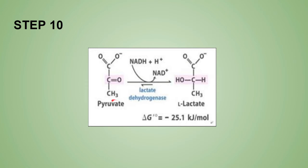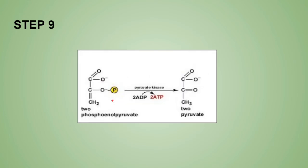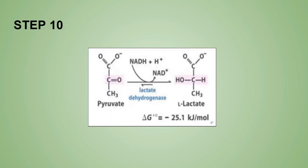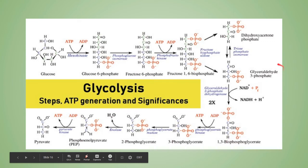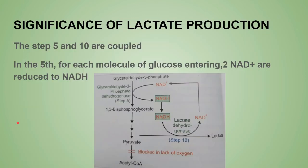Up to step 9, the pathway is oxidative; step 10 is anaerobic. Pyruvic acid formed through step 9 enters the citric acid cycle for complete oxidation of glucose. Lactic acid formed in step 10 enters the Cori cycle. A quick pathway recap: glucose → glucose-6-phosphate → fructose-1,6-bisphosphate → DHAP + GAP → 2 GAP → 1,3-BPG → 3-phosphoglycerate → 2-phosphoglycerate → PEP → pyruvate/lactate.